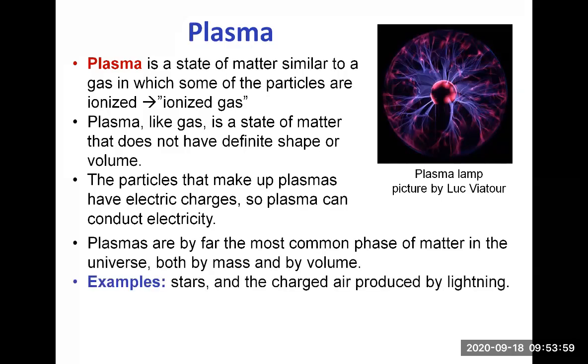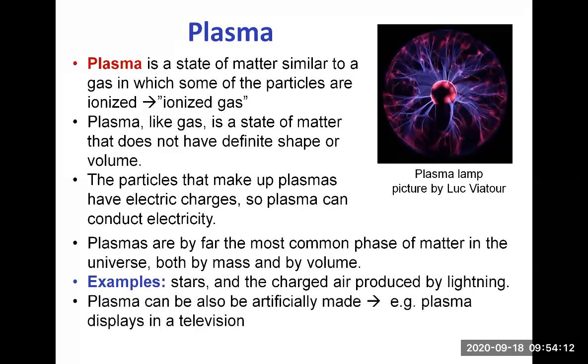Because plasma is found in stars. And on Earth here, we observe it as charged air produced by lightning. We also can make plasma. So it can be artificially made. For example, the plasma displays in televisions are man-made.